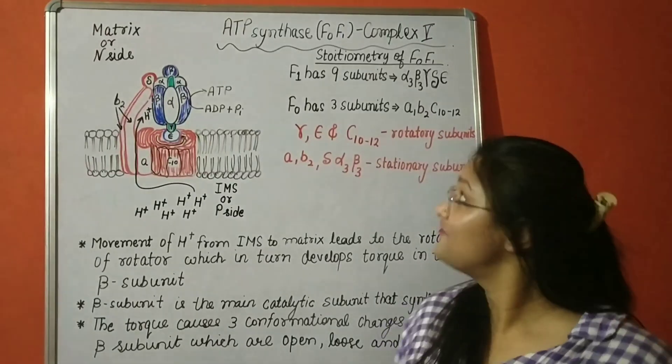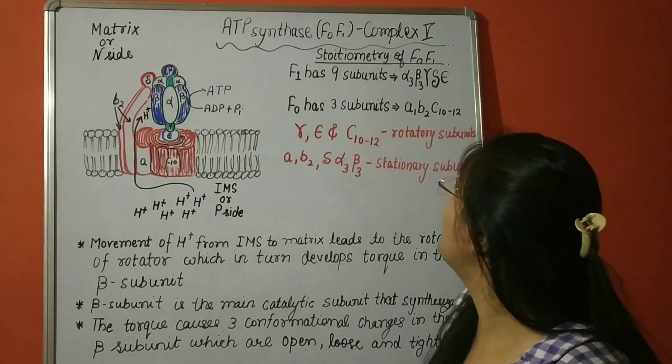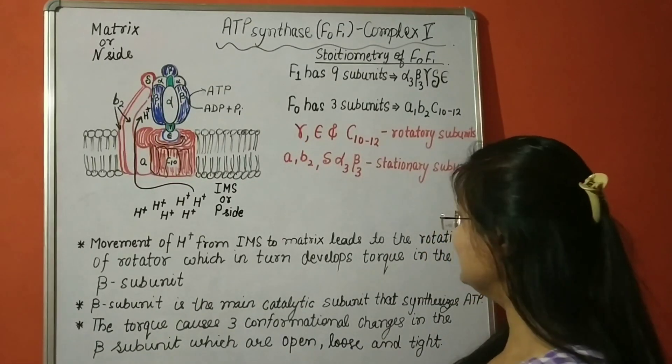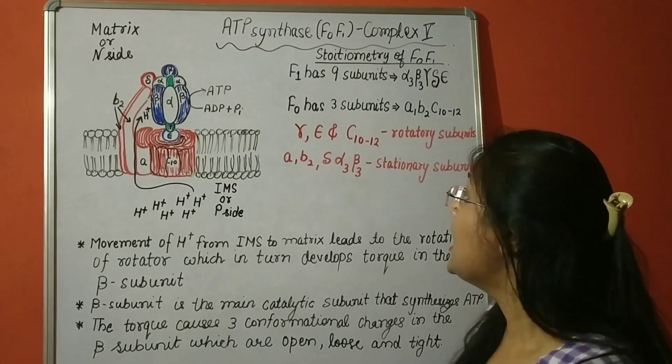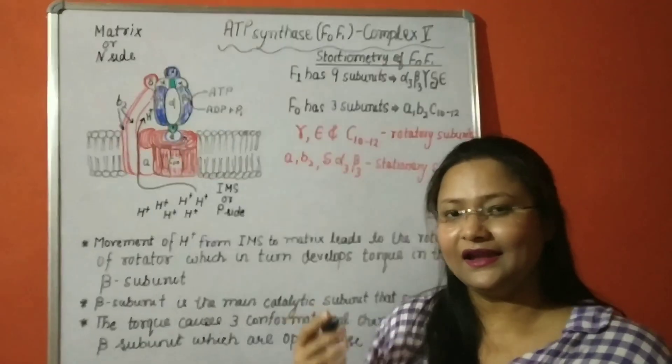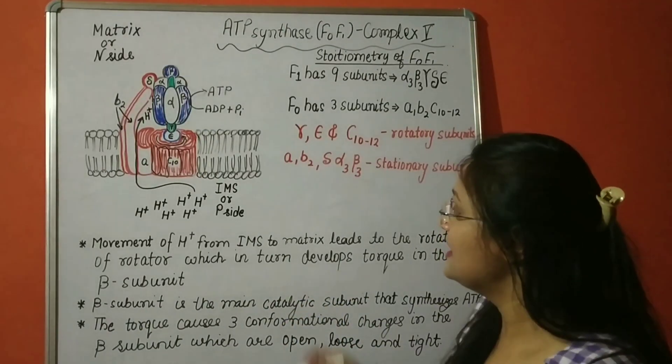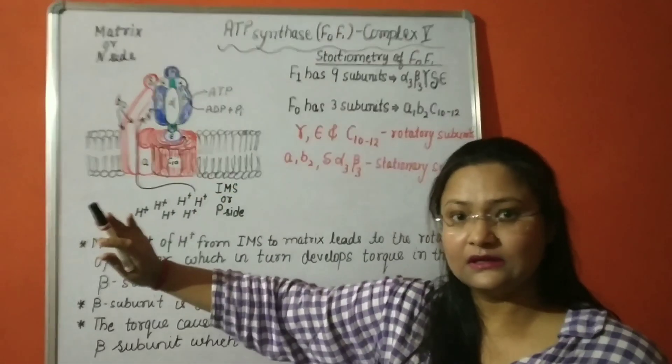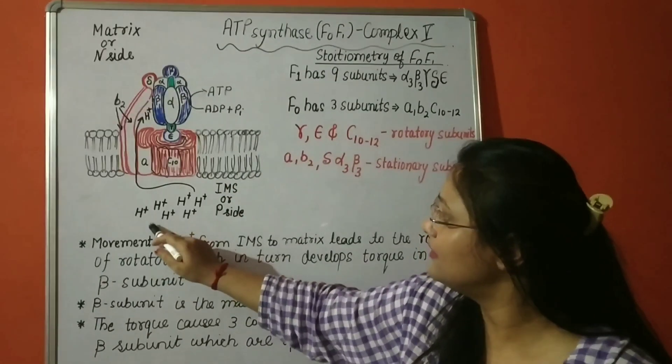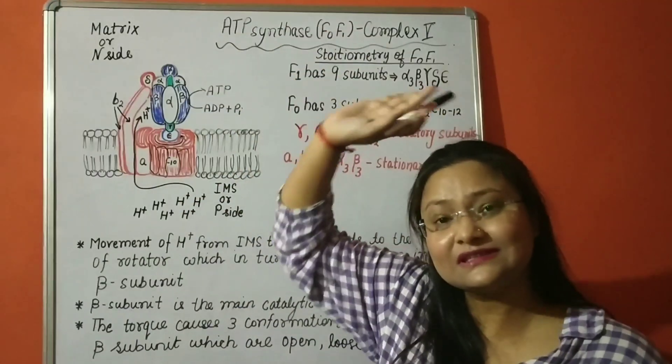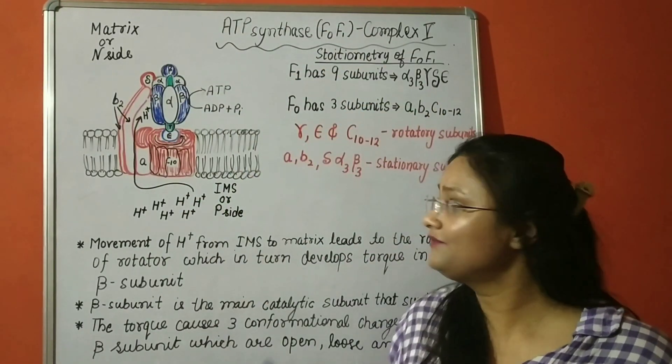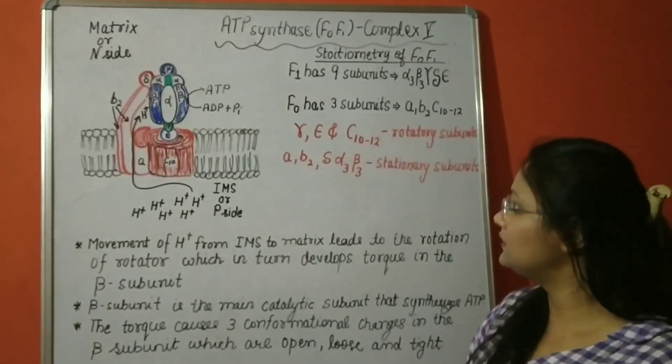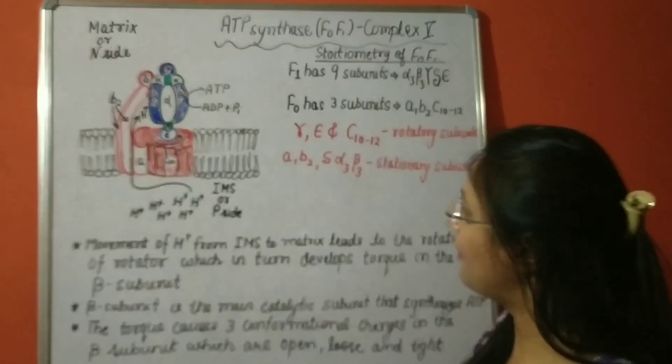Now let us discuss how exactly it makes ATP from the movement of H+ ion. So H+ ion will move from its gradient, from higher side to lower side. So this is a passive process. It will move automatically. It doesn't require any energy to do so.